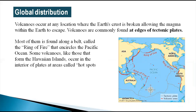Volcanoes can occur at any location where the earth's crust is broken, allowing magma within the earth to escape. They occur everywhere on earth, but particularly at those parts where tectonic plates are either colliding, meeting, or subducting. Where the corners of plates are meeting, that place is particularly prone to eruption of magma and lava, forming volcanoes.